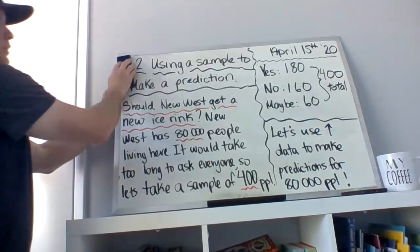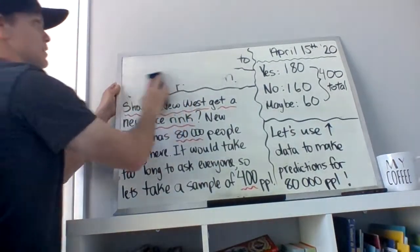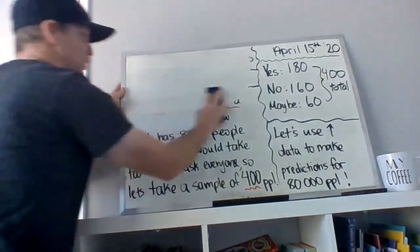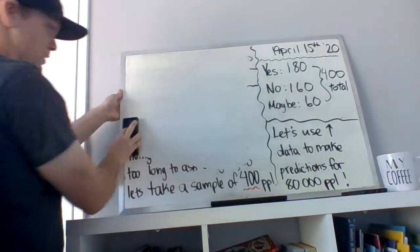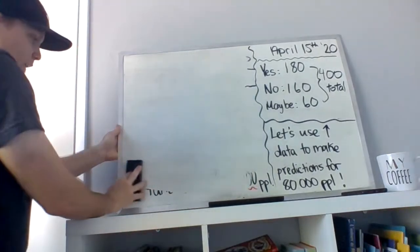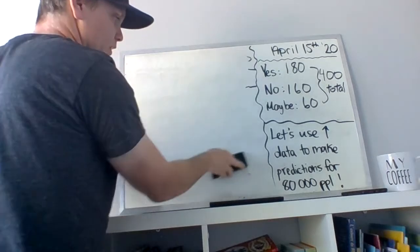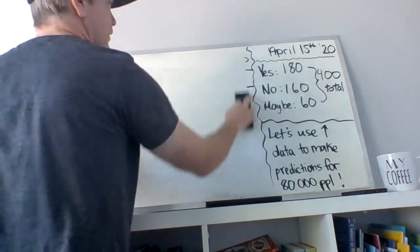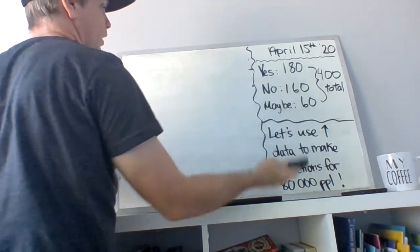I want to use this data to make predictions for 80,000 people. And I'm going to show you how we're going to do that. So I'm going to erase this side of my notes. Again, just rewind if you want to see this again.